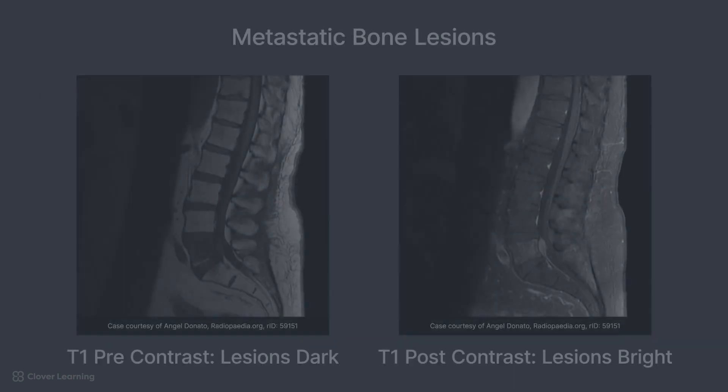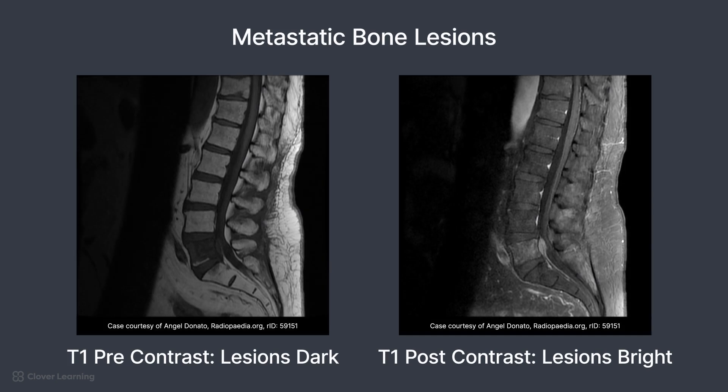Additionally, for patients with cancer, metastatic bone lesions may occur from a primary cancer that has spread to the spine. The metastatic lesions appear as darkened areas within the vertebral bodies. Contrast media would be needed for this pathology, and the metastatic lesions would appear bright post-contrast.